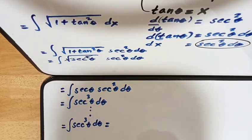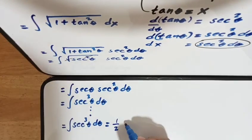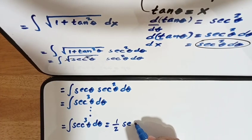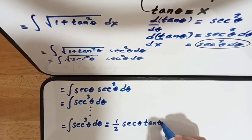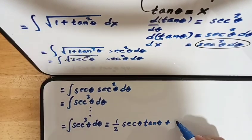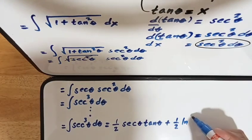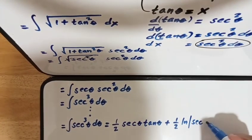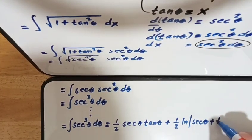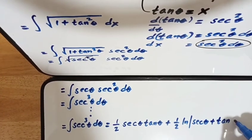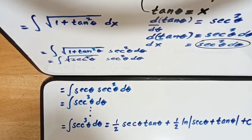The integral of secant cubed theta d theta is equivalent to one-half secant theta times tangent theta, plus one-half ln of the absolute value of secant theta plus tangent theta, plus C.